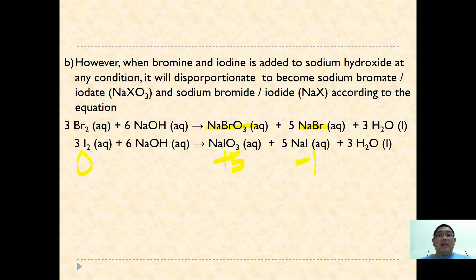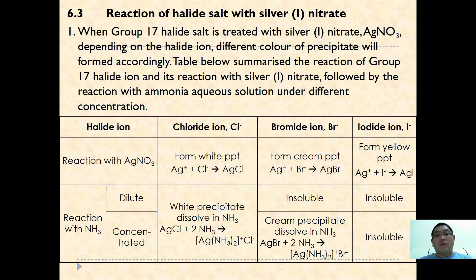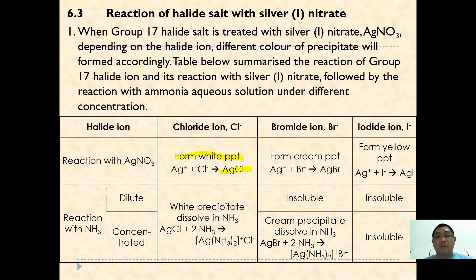The last reaction we will look at is the reaction of halide salts with silver nitrate. In Group 17, when a halide is treated with silver nitrate, depending on the halide ion, different colored precipitates will form. When the chloride ion reacts with silver nitrate, a white precipitate of silver chloride forms. If bromide replaces chloride, a cream precipitate of silver bromide forms.